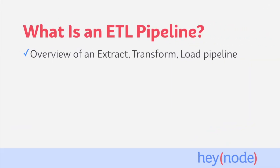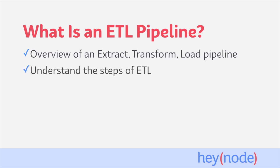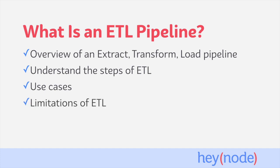In this tutorial, we're going to take a high-level look at what an Extract, Transform, Load pipeline is. We'll discuss the three different steps that make up an ETL pipeline: the Extract, Transform, and Load. We'll also discuss some of the most common use cases for ETL. Finally, an ETL pipeline isn't right for every kind of problem — we'll look at some of the limitations and problems you might encounter when creating one, so you can decide if it's the best tool to solve your issue.